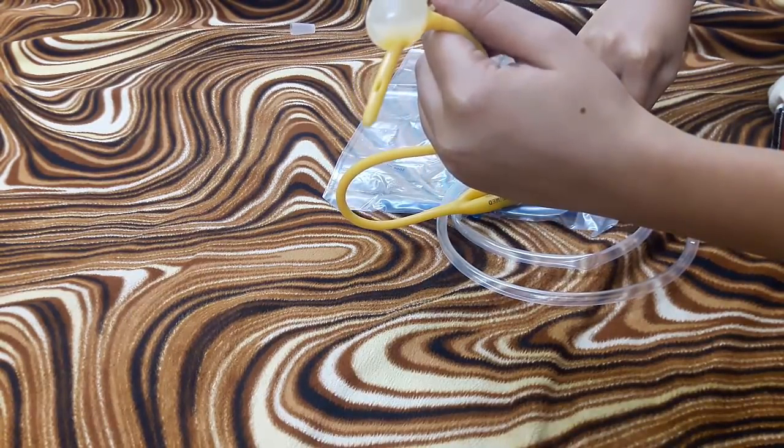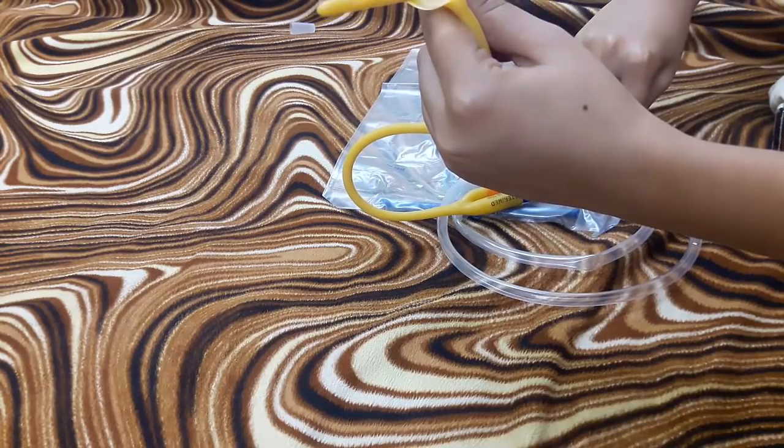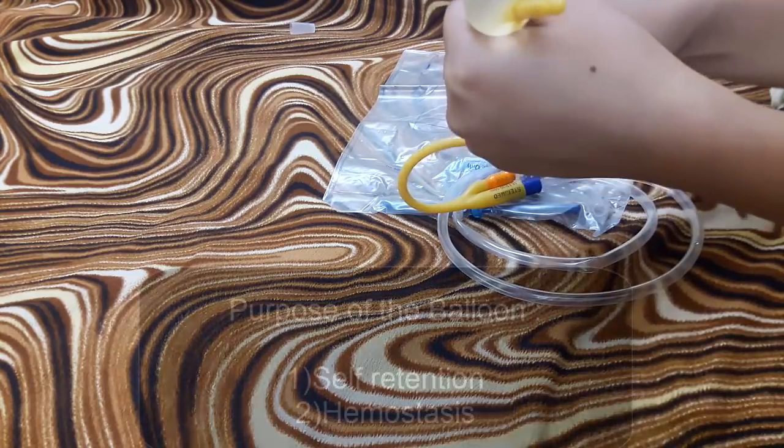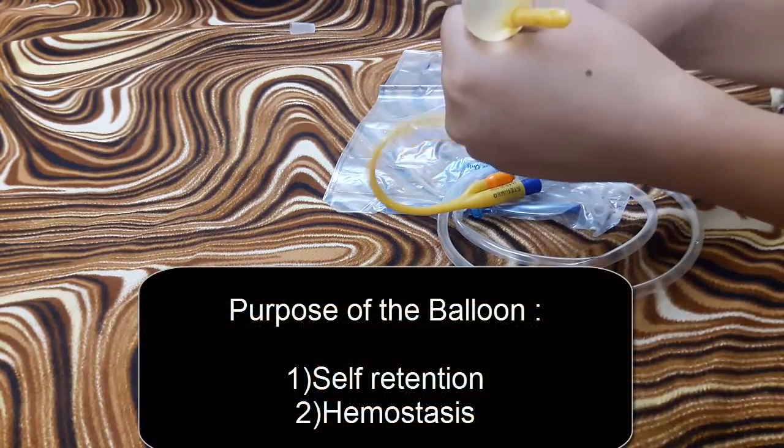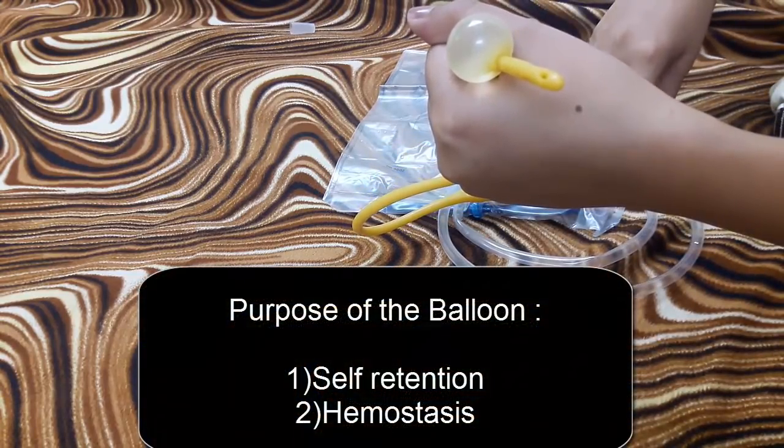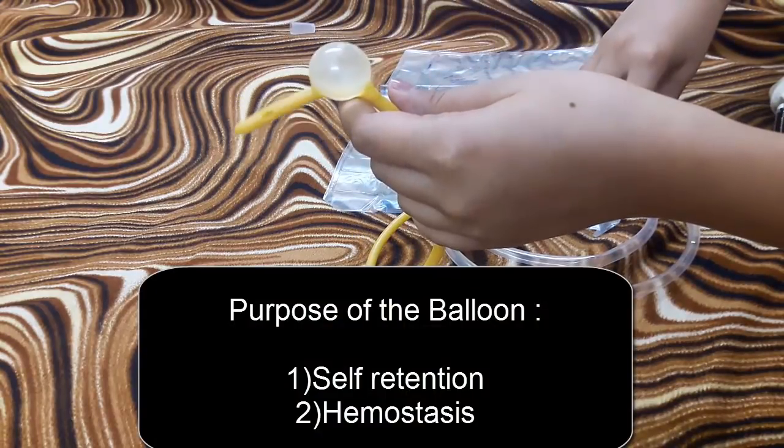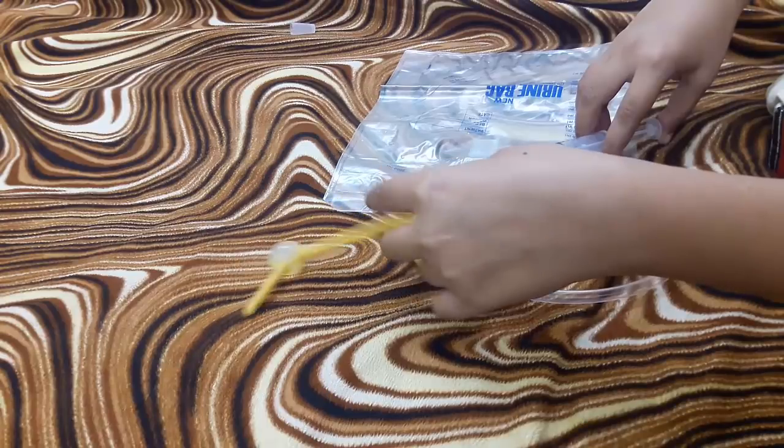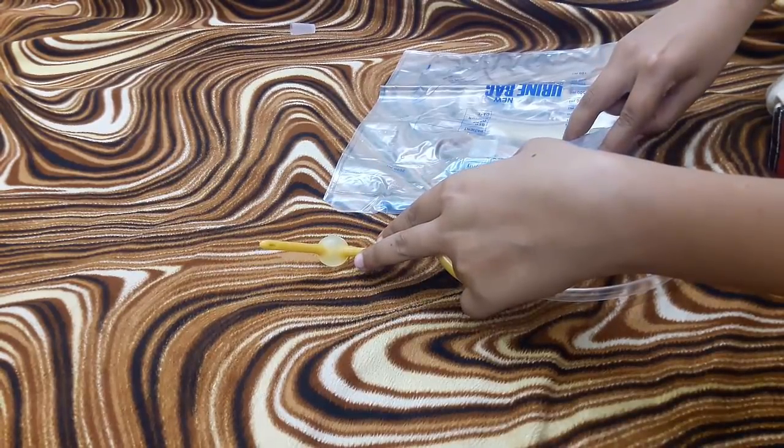What is the purpose of the balloon? The purpose is that it prevents the catheter from slipping out from the bladder. It is for self-retention and also for hemostasis purposes. For deflating, just aspirate the normal saline.